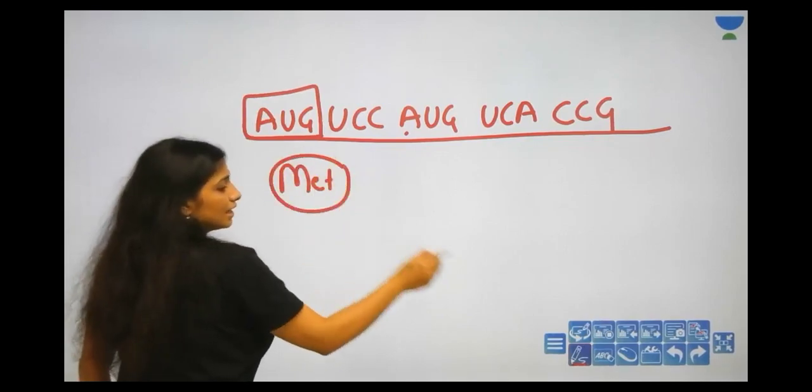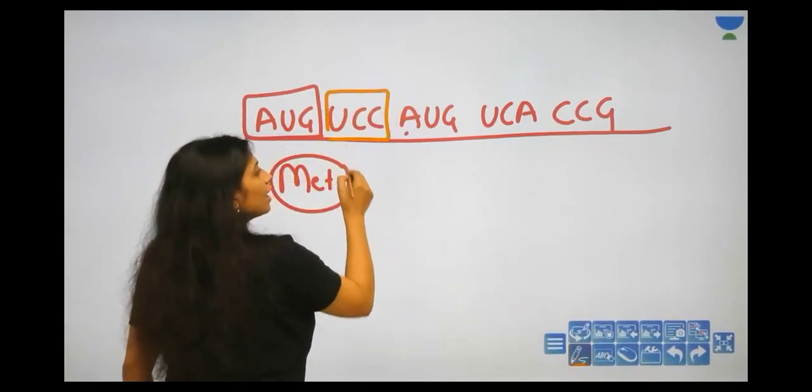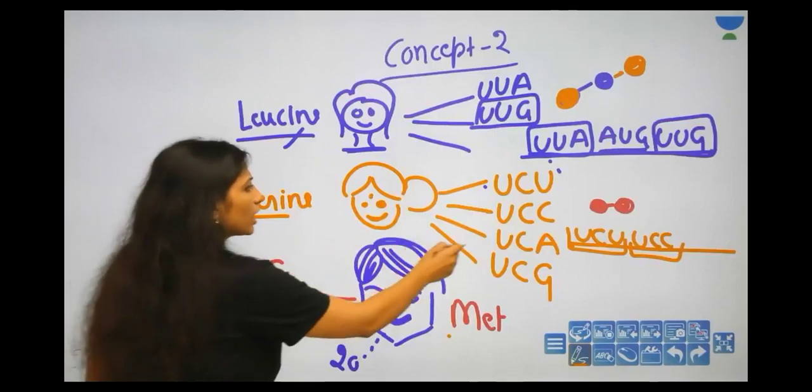First of all, it will come to methionine. Then, UCC is the code? UCC is the code that you have written back. Serine is the code.